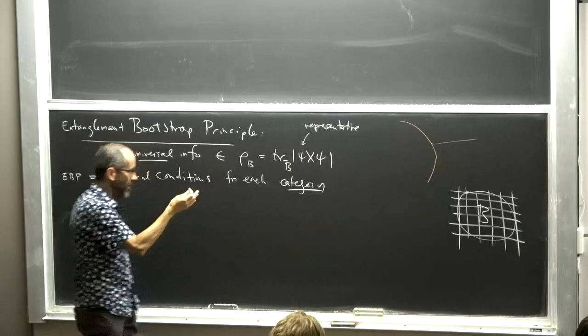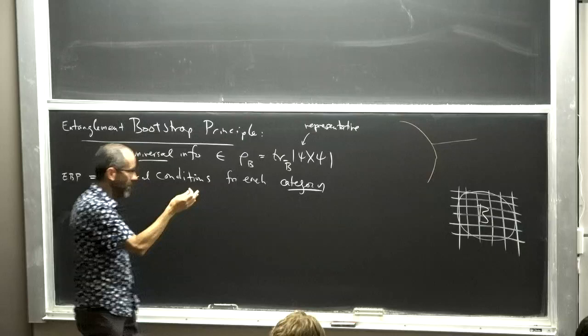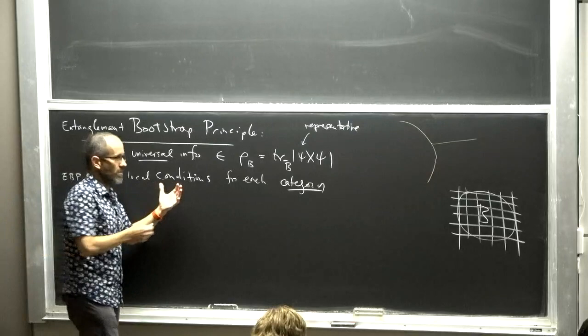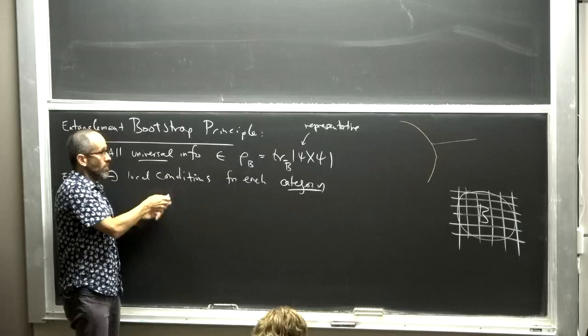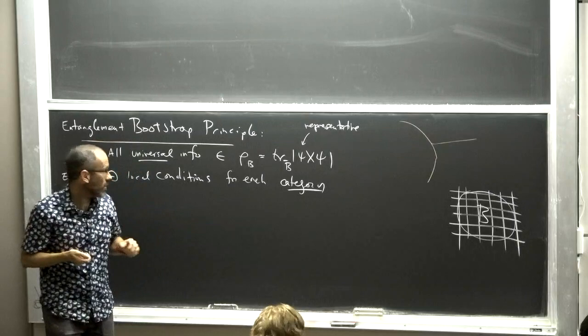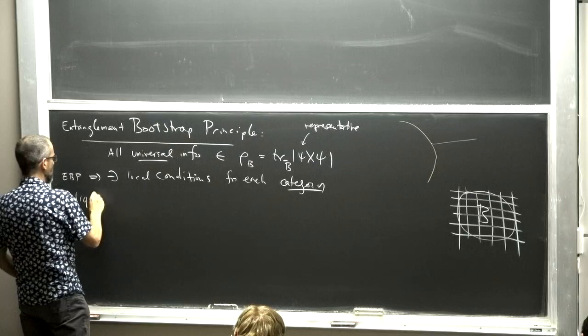The first thing to notice is that this principle implies there should exist local conditions on the state that tell us which kind of phase of matter the state represents — whether it's a gapped ground state representing some topological order, a CFT ground state, an excited state, and so on. For each category, there should be local conditions. Today we're going to start with liquid topological order — no fractons — in two plus one dimensions.